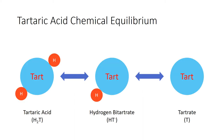Moving into pH and tartrate stability — this is an advanced, college-level chemistry topic, but the examiner's report specifically mentioned it. Tartaric acid exists in equilibrium in wine. There are three forms: tartaric acid (the skeleton with two protons attached), hydrogen bitartrate (the skeleton with one hydrogen, HT⁻), and tartrate (where both hydrogens have left the skeleton and are floating as free protons). This is very similar to how sulfur dioxide splits into different forms in wine.